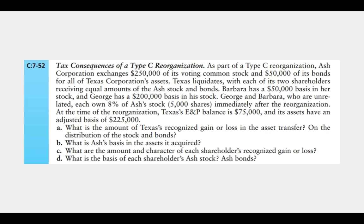As part of a Type C reorganization, Ash Corporation exchanges $250,000 of its voting common stock and $50,000 of its bonds for all of Texas Corporation's assets. Texas liquidates, with each shareholder receiving equal amounts of the Ash stock and bonds. Barbara has a $50,000 basis in her stock and George has a $200,000 basis in his stock; both own 8% of Ash's stock after the reorg. At the time of the reorg, Texas's E&P balance is $75,000 and its assets have an adjusted basis of $225,000. First, we confirm this qualifies as a Type C.